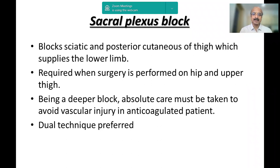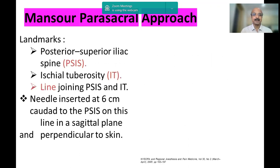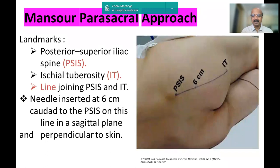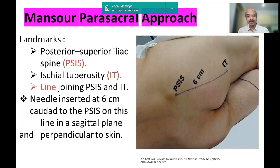The sacral plexus block targets the sciatic and posterior cutaneous nerve of the thigh, required when surgery is performed on the hip and upper thigh. It is a deeper block and absolute care must be taken to avoid vascular injury, but with an INR of 1.5 it is still feasible. The Mansoor parasacral approach is very simple — it is landmark-based: mark the posterior superior iliac spine, draw a line to the ischial tuberosity, go down six centimeters from the PSIS, and that is the needle entry point. It can be done with a peripheral nerve stimulator, looking for quadriceps muscle contraction.